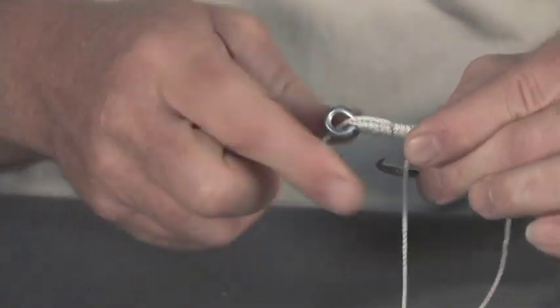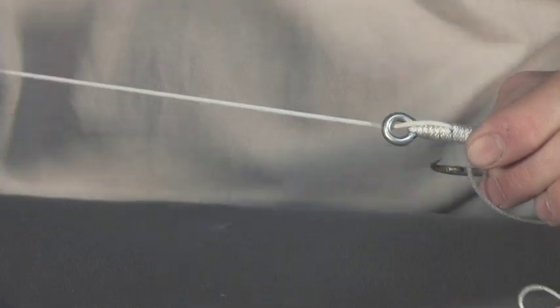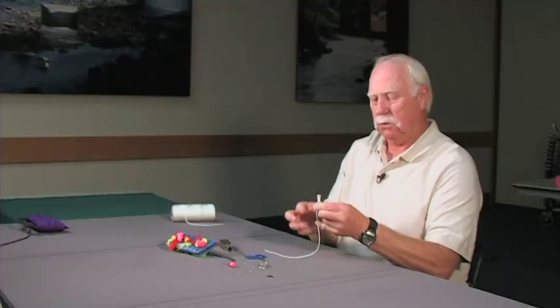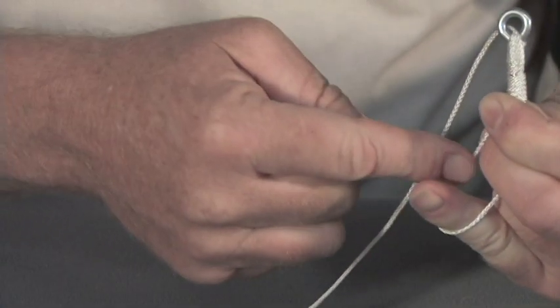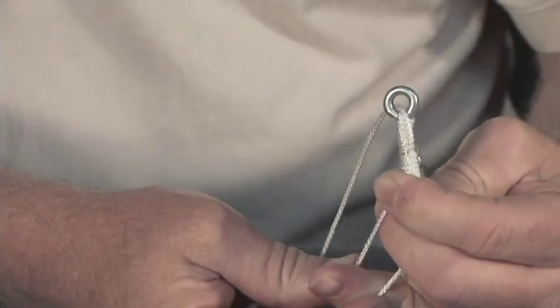Pull on the other tag end coming out of the eye, which will draw the loop up. As you do this, you're putting kinks in your main line, so you need to hold it to manage those kinks.